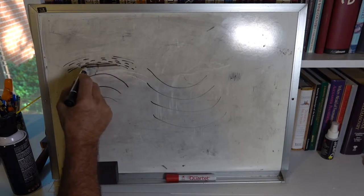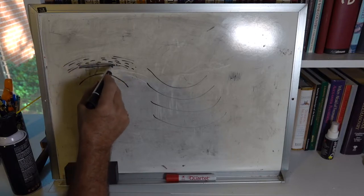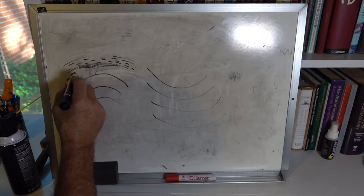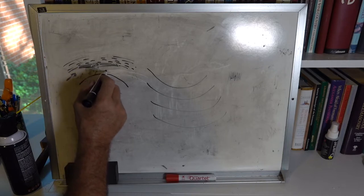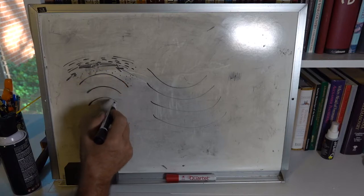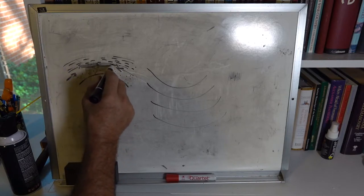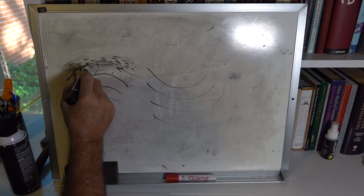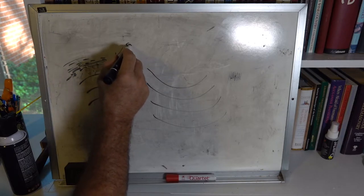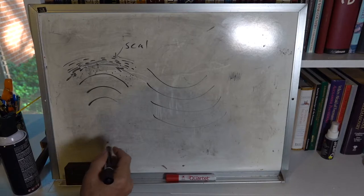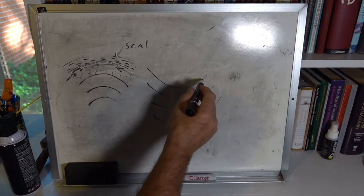The way an anticlinal trap works is that oil migrates in from the sides — say this is a sandstone (represented by a pattern of dots) — and the oil migrates up into that structure. This is called a structural trap. The trap itself is below the seal, with the seal rock above it. This is a type of anticlinal trap, or structural trap.